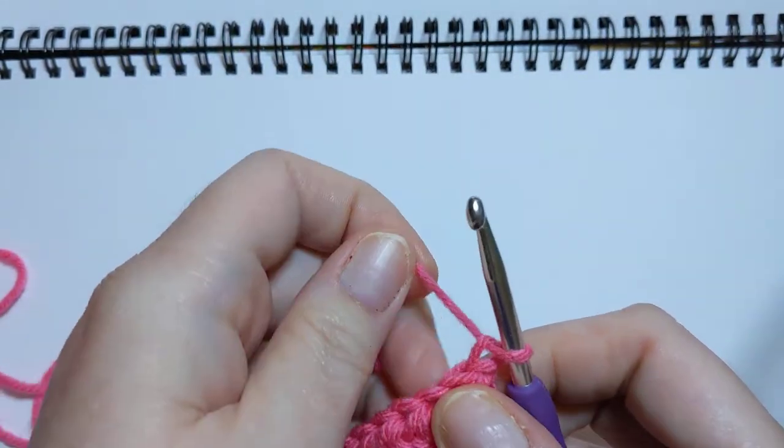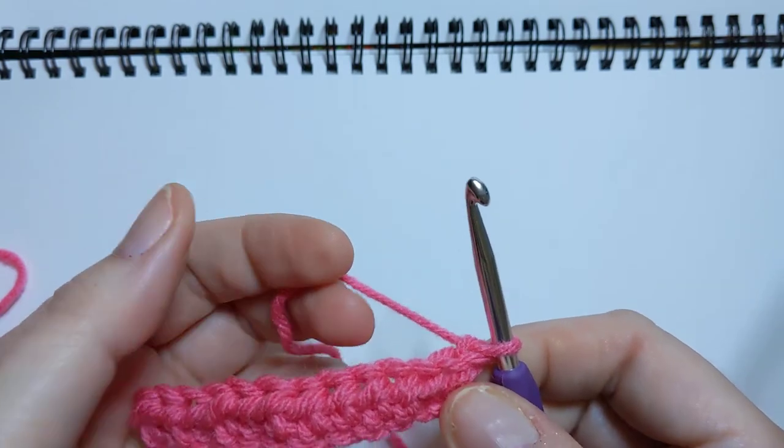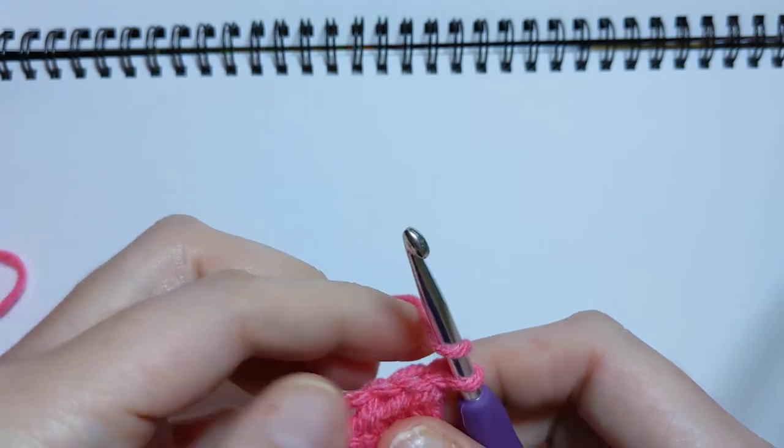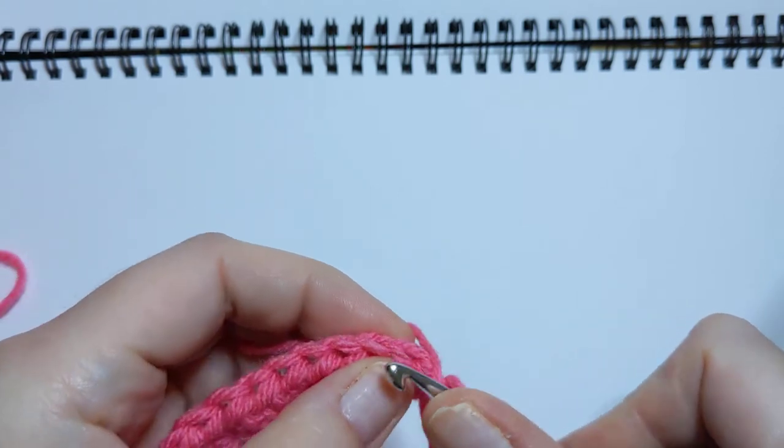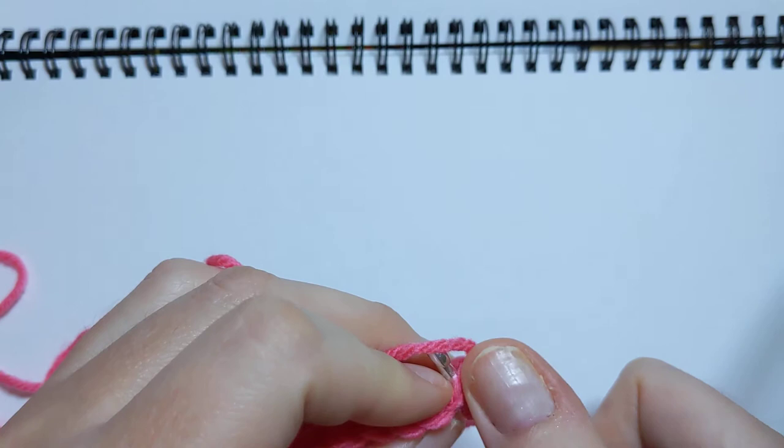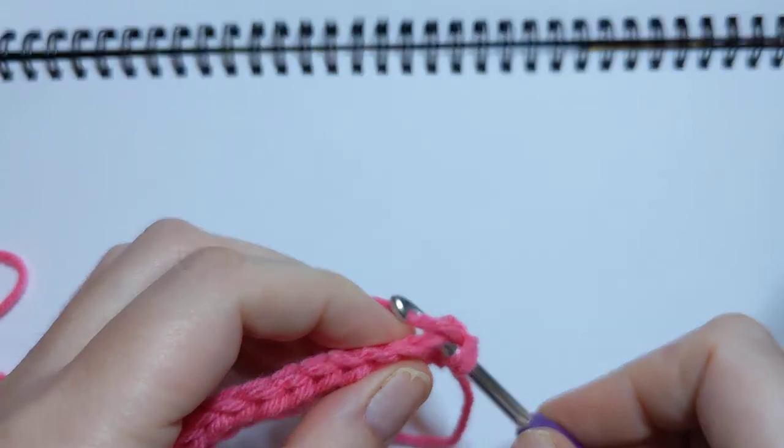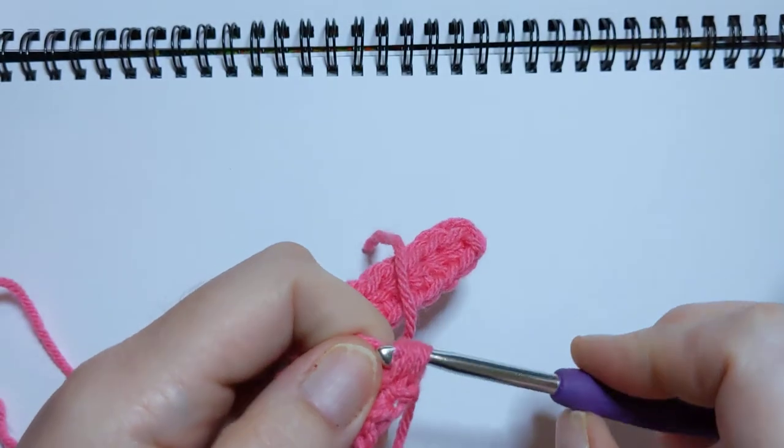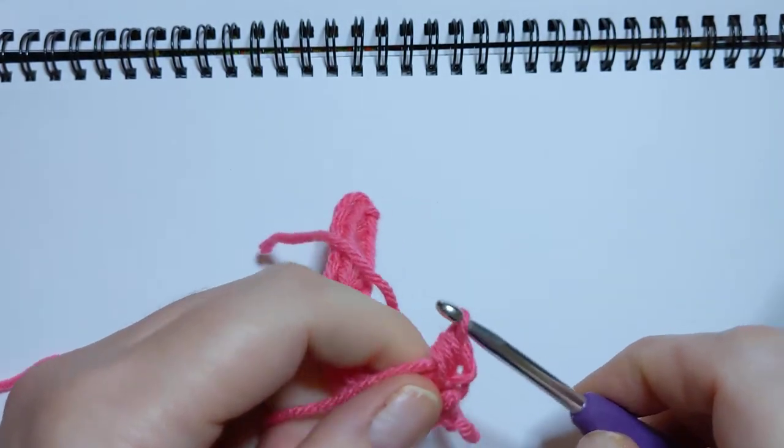Now to do a half double crochet, of course you're going to yarn over, go into the stitch—that's that V at the top when you've already got that second row—pull up a loop, yarn over, and pull through all three loops on your hook.